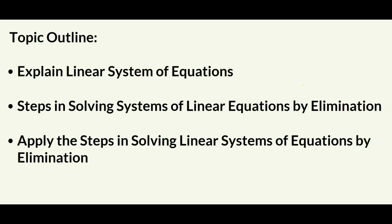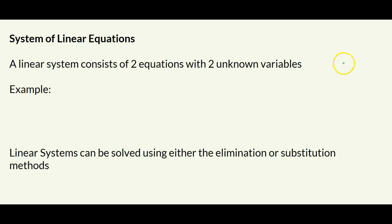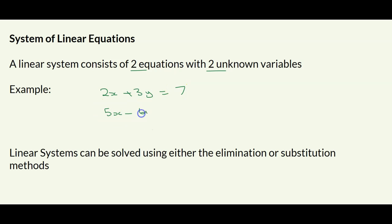What are linear systems? A linear system consists of two equations with two unknown variables — the same unknown variables in each equation. For example, 2x + 3y = 7 and 5x − 6y = 3 form a linear system because we have two unknown variables and two equations. Linear systems can generally be solved using elimination or substitution methods, but in this lesson we'll focus on elimination.